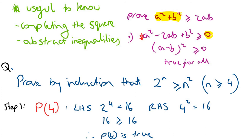We start by checking the lowest possible value of n, which is n = 4. The left-hand side gives 2 to the power of 4 = 16, and the right-hand side gives 4² = 16. So 16 ≥ 16, therefore it's true for n = 4.